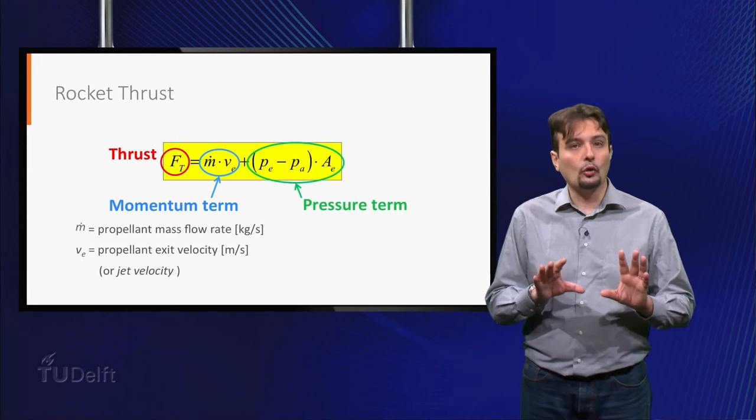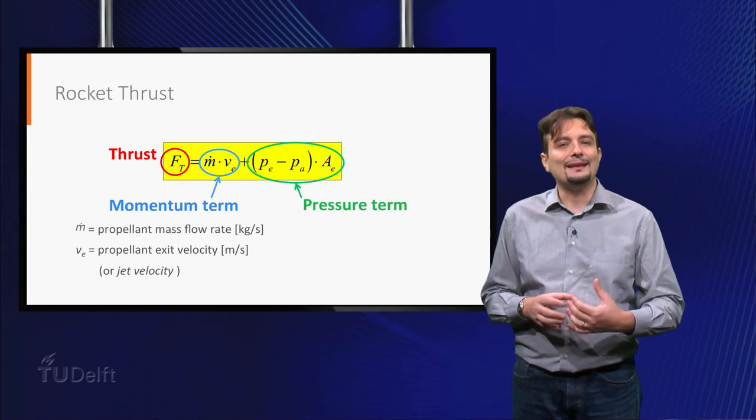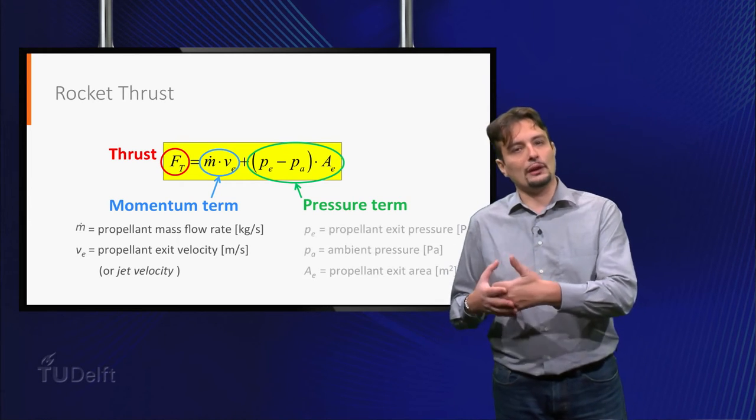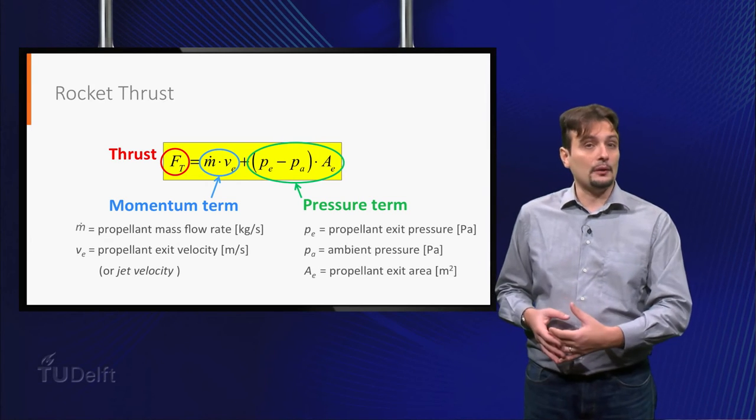The second contribution is called pressure term. This term is generated by the difference between the pressure at which the propellant is expelled, from the rocket exit section, and the surrounding ambient pressure.